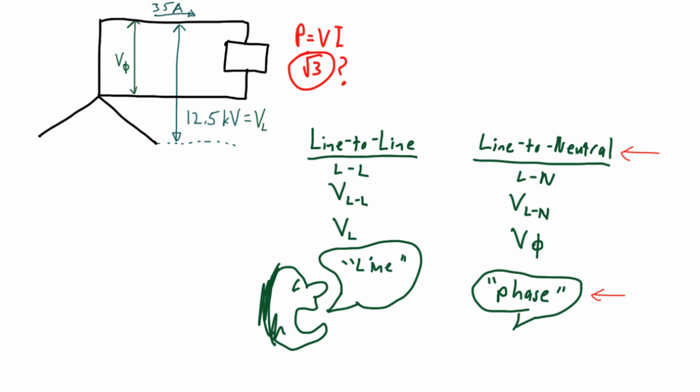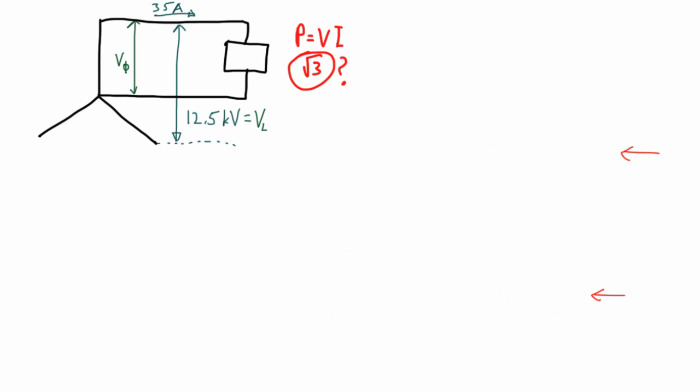And from our last video, we saw that line values are the larger values, while the phase values are the smaller ones. So this indicates to us that we must divide by root 3 to get the smaller value. Here, we're moving from large to small.